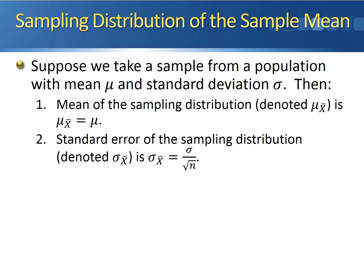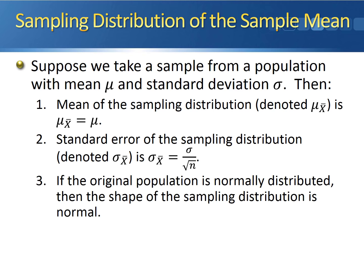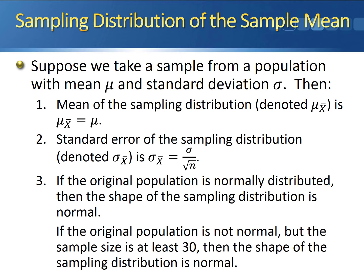The standard error of the sampling distribution, denoted sigma sub x-bar, is equal to the standard deviation of the original population sigma divided by the square root of the sample size. Finally, if the original population is normally distributed, then the shape of the sampling distribution is normal. If the original population is not normally distributed but the sample size is at least 30, then the shape of the sampling distribution is also normal.